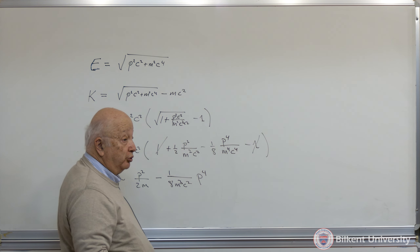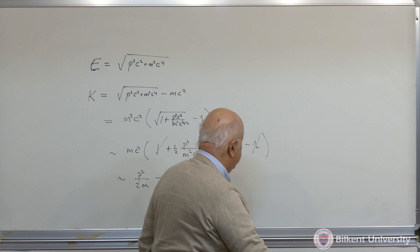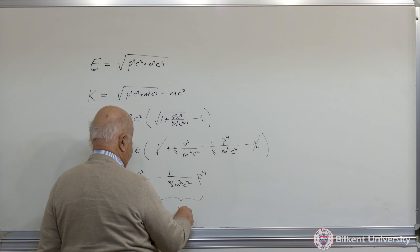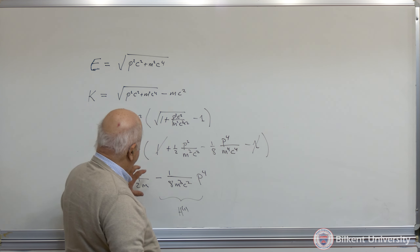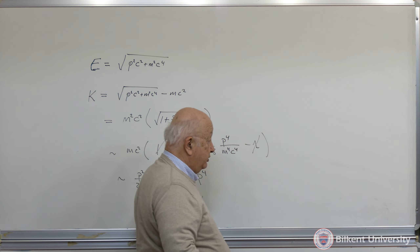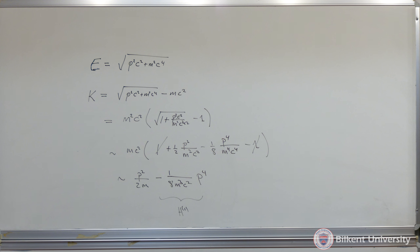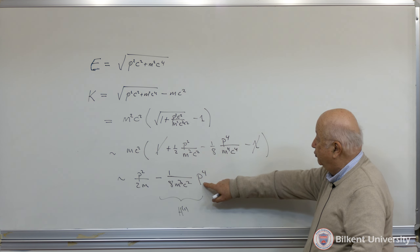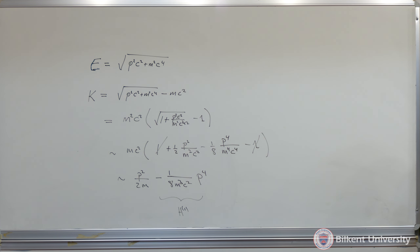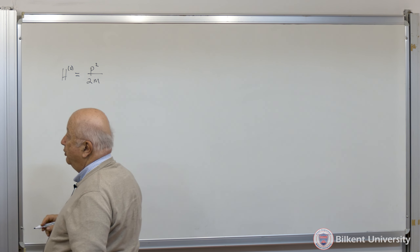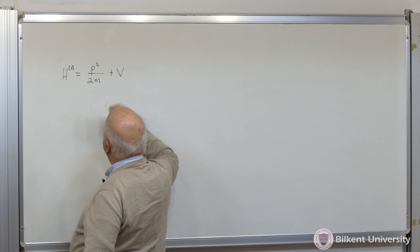To lowest order as a correction, we are going to take this p to the fourth term as the addition to the p squared over 2m. So it's going to be the first-order correction to the energy. We group terms so that we get this p to the fourth term. Remember, our H zero is the ordinary kinetic energy term, which is p squared over 2m, and then there is some potential energy term V.